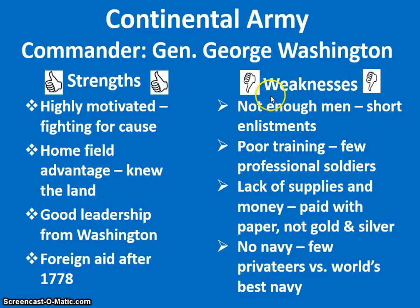However, the Continental Army had some glaring weaknesses. They didn't have enough soldiers, and those that they had were only there for a short time. What soldiers they had were mostly poorly trained, with very few professionals compared to the British Army. They lacked money and supplies, and they paid in paper rather than gold and silver the way the British did. And they really didn't have a standing Navy — just a few privateers, meaning private ships and in some cases pirates, versus literally the world's best Navy.